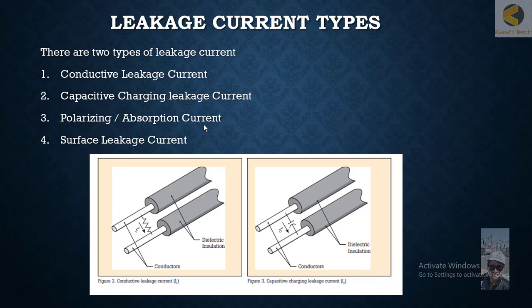The fourth type is the surface leakage current. This is mostly seen in bushings, where some current flows through the surface of the conductor of the bushing, and this also adds to the leakage current. So these are the four different types of leakage current.